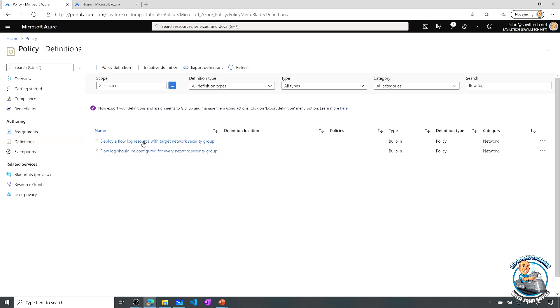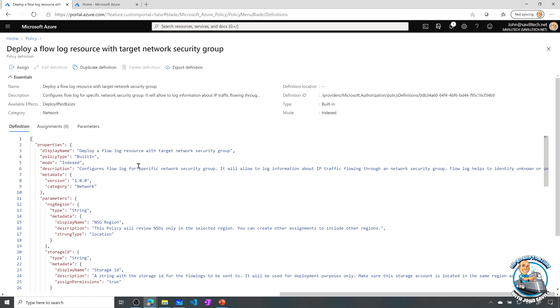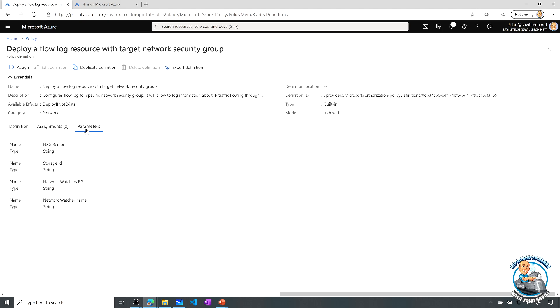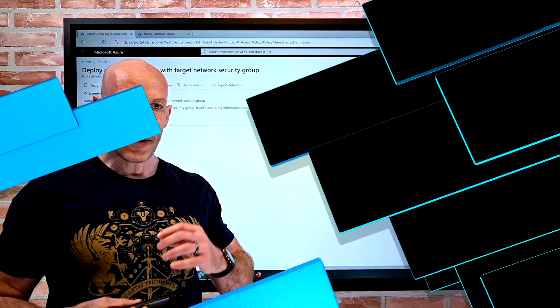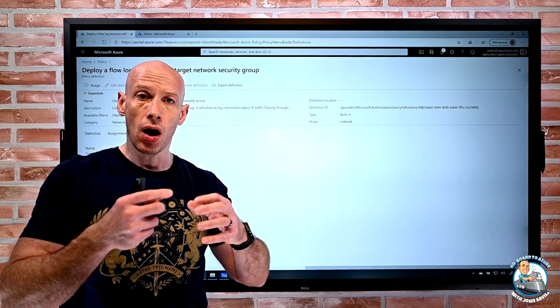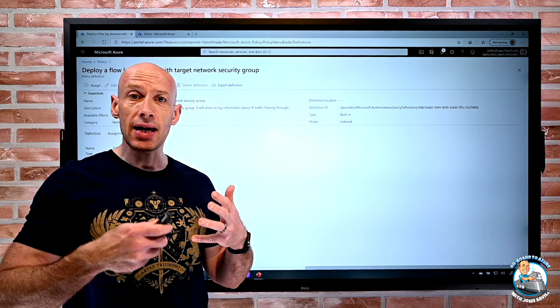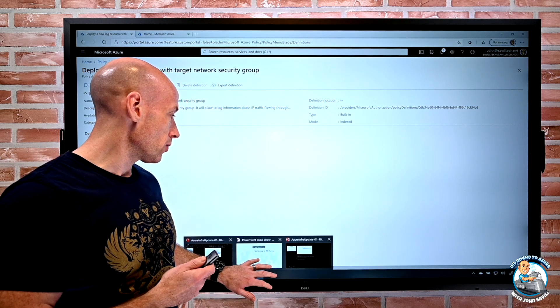But then there's also deploy the flow log. So in this case, the action's actually going to be a deploy if not exists, and we'll go through and actually configure that. You can see here there's various parameters you would configure on that to complete the configuration. So it's something you've been able to do for a while if you created your own ARM template to define the policy. Well, now there are just these inbox policies actually for you. So before you had to create your own.